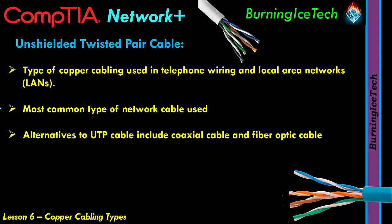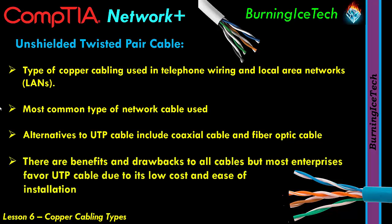Coaxial cable is a very old kind of cable — you could call it legacy. Fiber optic cable is a much newer kind of cable, much faster but also much more expensive, and it does not use copper — it uses light and glass, or laser and glass. Most enterprises tend to favor UTP cable due to its low cost and ease of installation. Should UTP not work, maybe because there's a higher amount of EMI, the next cable of choice will probably be STP. And if you really can't use STP, you'll probably end up using something like fiber — completely immune to EMI.